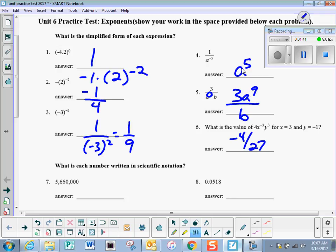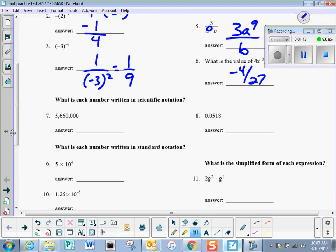Okay, number 7, to write a number in scientific notation, I have to put the decimal there, so how many places do I have to make it smaller? 3, 4, 5, 6. So if I make it smaller by 6, then in order to keep it equivalent, I need to make it bigger by 10 to the 6th power.